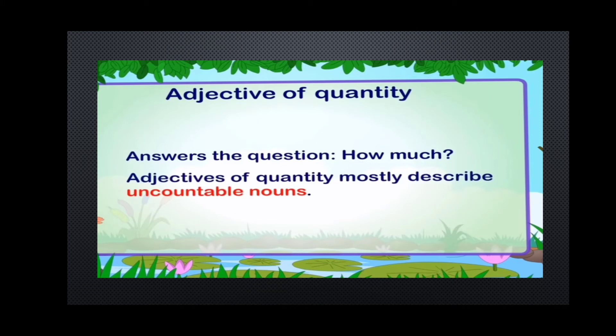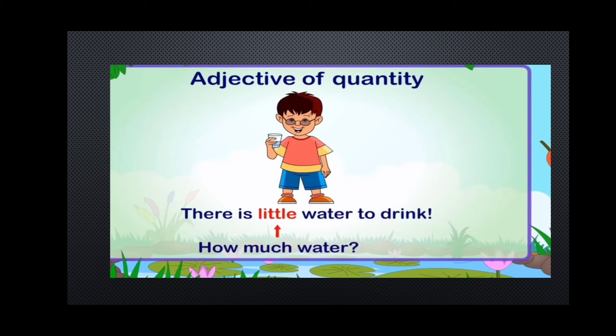Next is adjective of quantity. It answers the question: how much? An adjective of quantity tells us about the quantity of a thing. Adjectives of quantity mostly describe uncountable nouns. For example: there is a little water to drink — how much water? Little. There is some water in the pot — 'some' is the quantity. We do not have enough time — 'enough' is the quantity. This is how they tell about the quantity of a thing.